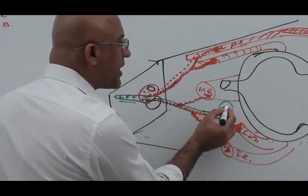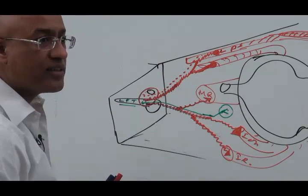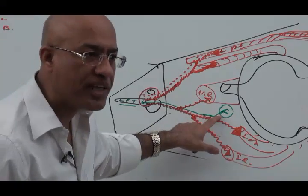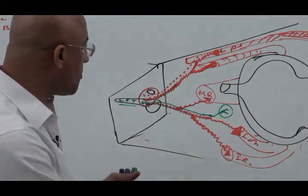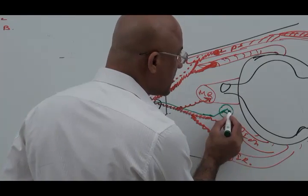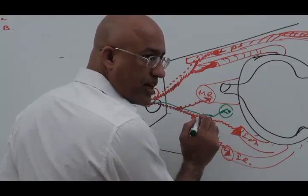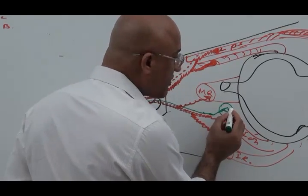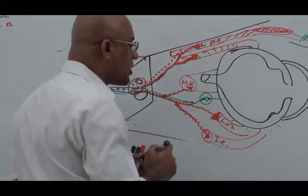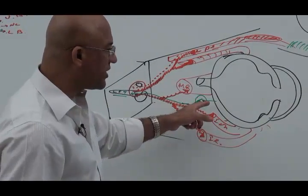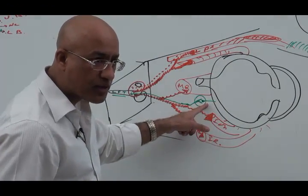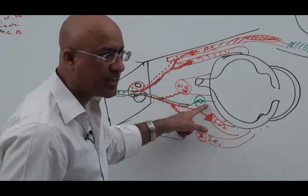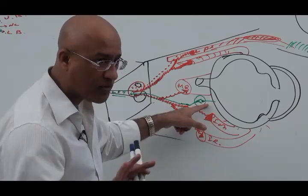Here these preganglionic fibers of parasympathetic nervous system neurons which started from Edinger-Westphal in the midbrain, they terminate. From here the postganglionic fibers emerge as short ciliary nerves. There are about 8 to 10 short ciliary nerves which have parasympathetic postganglionic fibers. Later on in ciliary ganglion I will explain they also have some sensory fibers and sympathetic fibers.